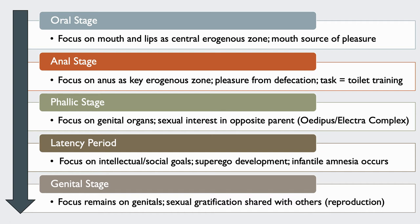Next, we have the anal stage, which begins around 18 months and continues until about preschool age. Now the libidinal energy is directed at the anus, and the focus moves towards mastery of defecation. Freud argued that children experience pleasure from defecation and warned that being too strict or too lenient during potty training could have significant repercussions, leading towards anal personality characteristics. Someone stuck in this stage may be prone towards being stubborn, excessively organized, or stingy. You might be familiar with the terms anal retentive and anal expulsive personalities — people who are overly controlling and obsessive on one end, and overly messy and inconsiderate on the other.